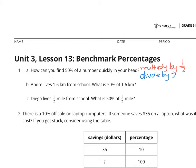Let's take a look at B. Andre lives 1.6 kilometers from school. What is 50% of 1.6? Well, if we were to take that 1.6 and divide it by 2, we would get 0.8 kilometers.